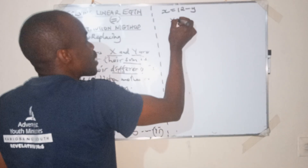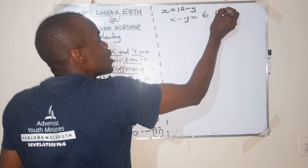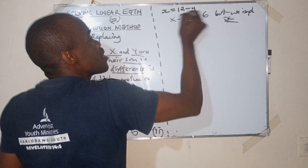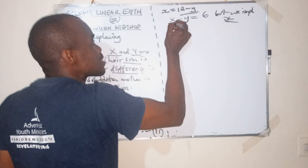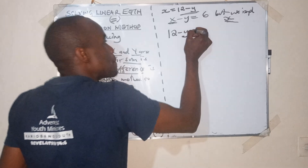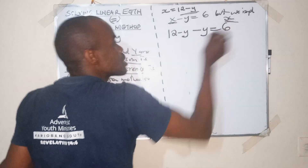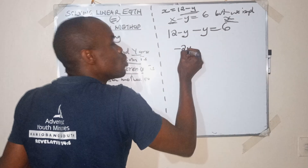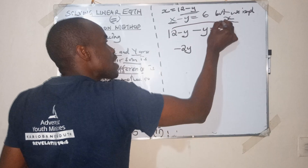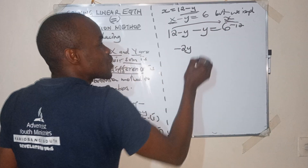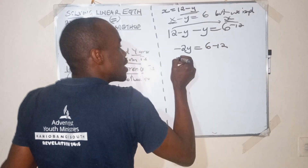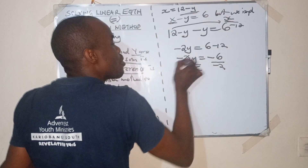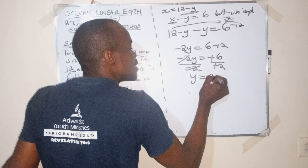The second equation is x minus y equals 6. We replace x with 12 minus y. So we have: 12 minus y minus y equals 6. This gives us negative 2y. Taking 12 to the other side: negative 2y equals 6 minus 12, so negative 2y equals negative 6. Dividing both sides by 2.